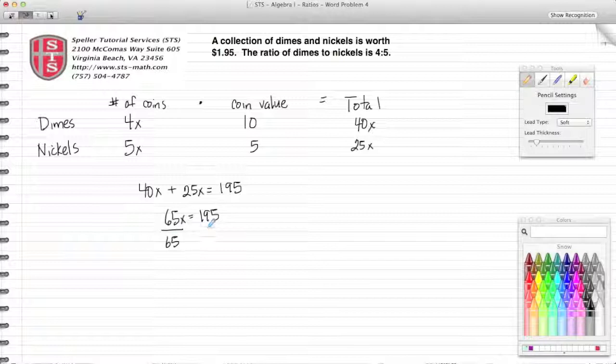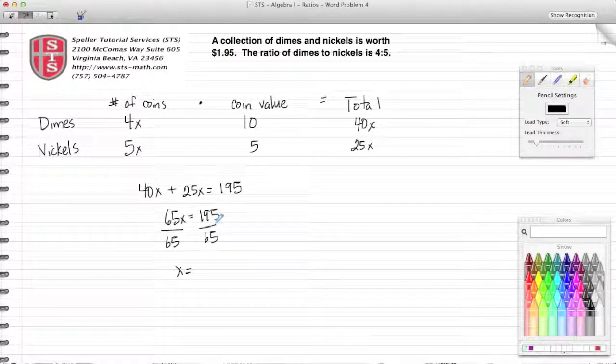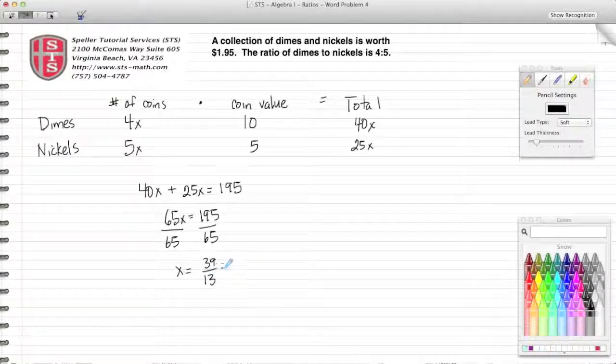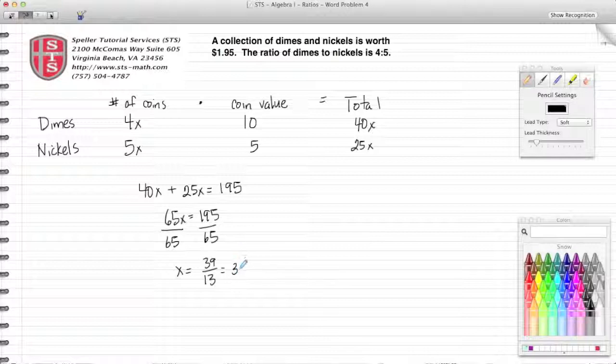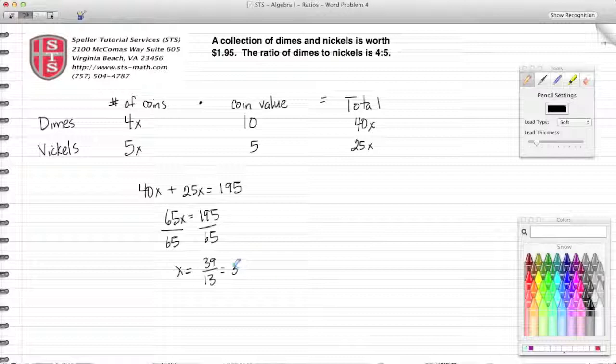We need to solve for x, so we divide both sides by 65. Both of these numbers end in 5, so they can be divided by 5. 5 goes into 195 39 times, and 5 goes into 65 13 times. All right, here I can see that 13 goes into 39 three times, so I know that x is 3.